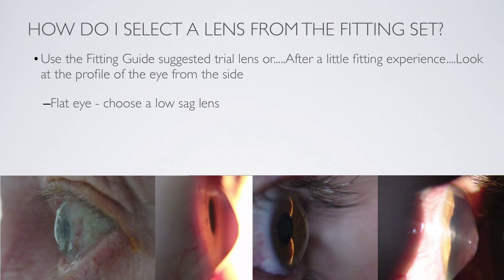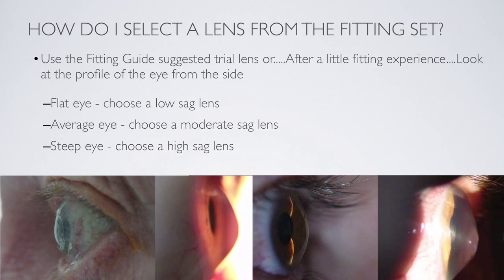We have a set that ranges from maybe 380 up to 560 sag. When you have an eye that is average, you pick something from the middle of the set. As you get more experience, you're going to get more and more ability to accurately, within 100 microns, choose the lens that you want to start with.